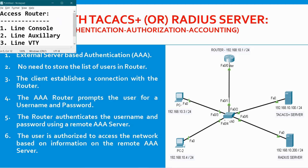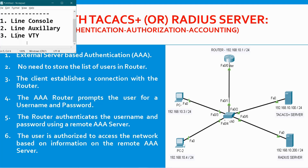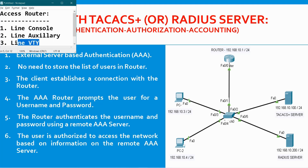Generally, the router can be accessed in three ways: line console, line auxiliary, and line VTY. Out of these three, the first two are used for local access and the last one, VTY, is used for remote access through Telnet or SSH.